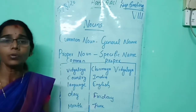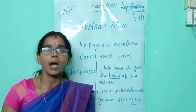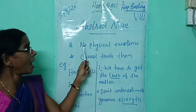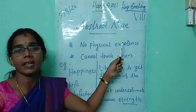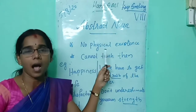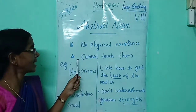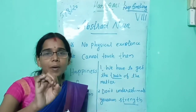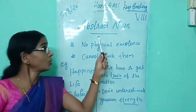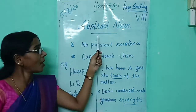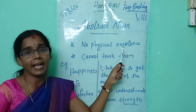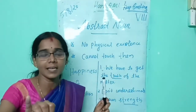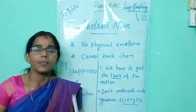Now move on to abstract nouns. Abstract nouns have no physical existence, and we cannot touch them. Those are the two key points to remember: abstract nouns have no physical existence, and we cannot touch them.